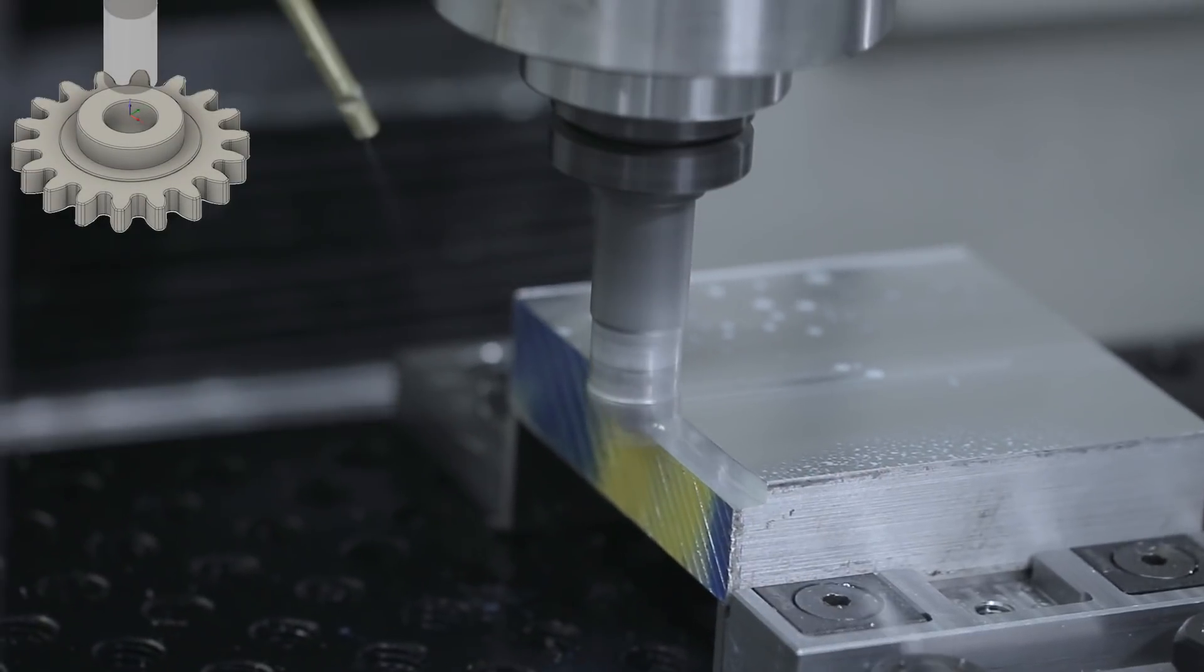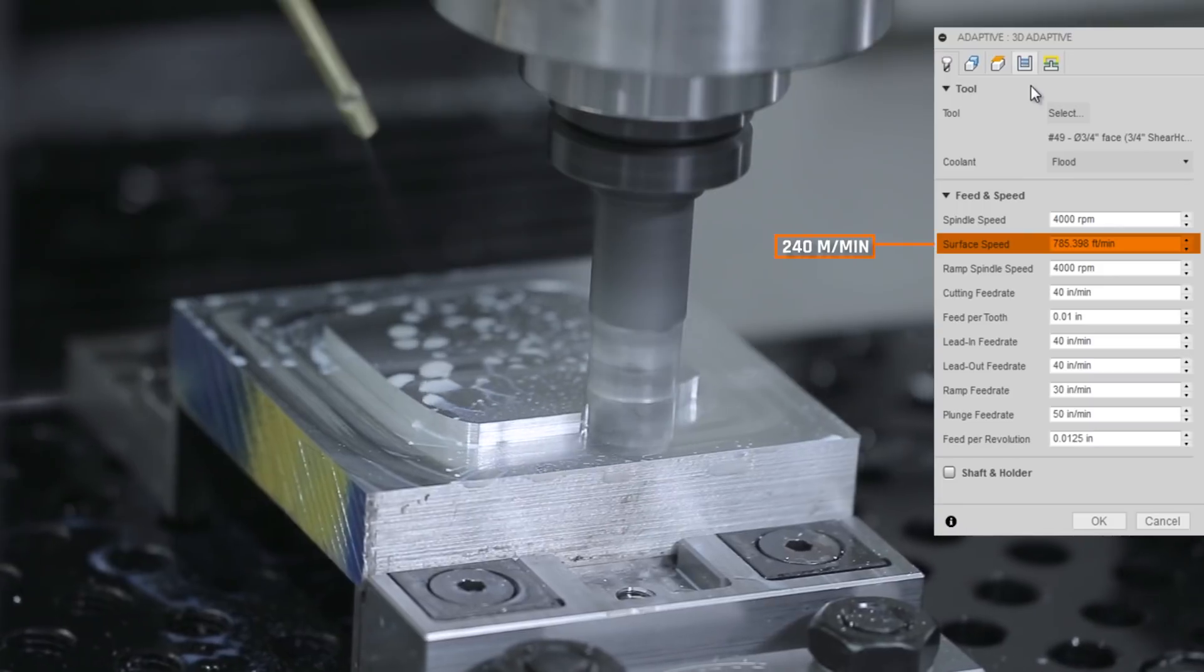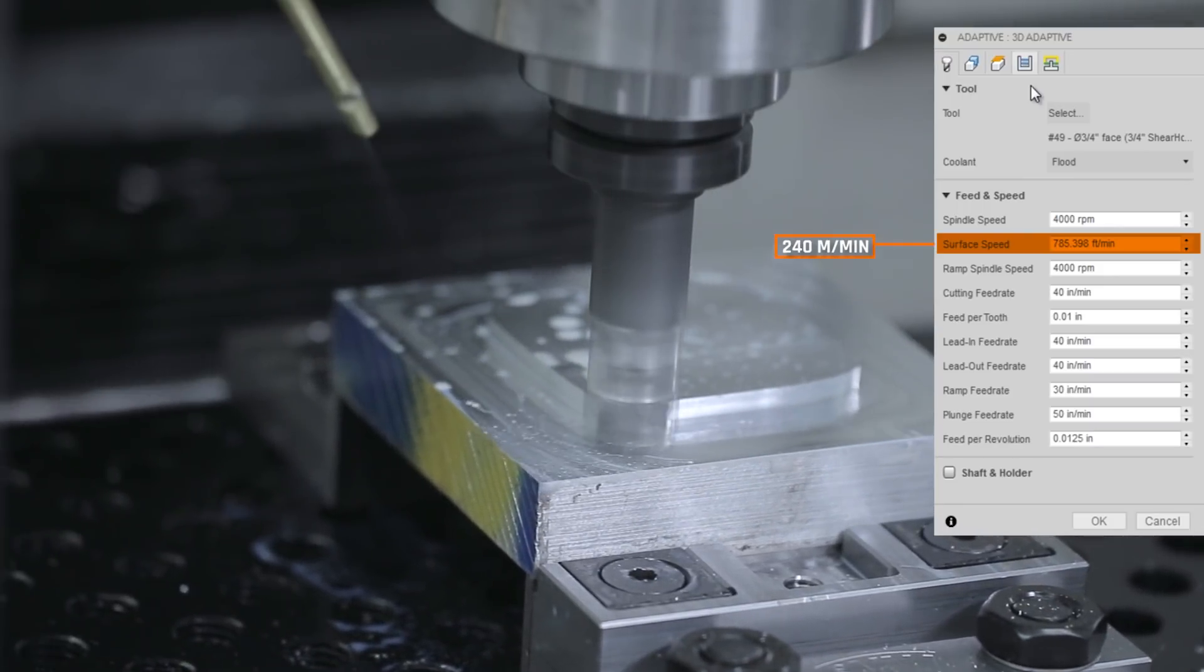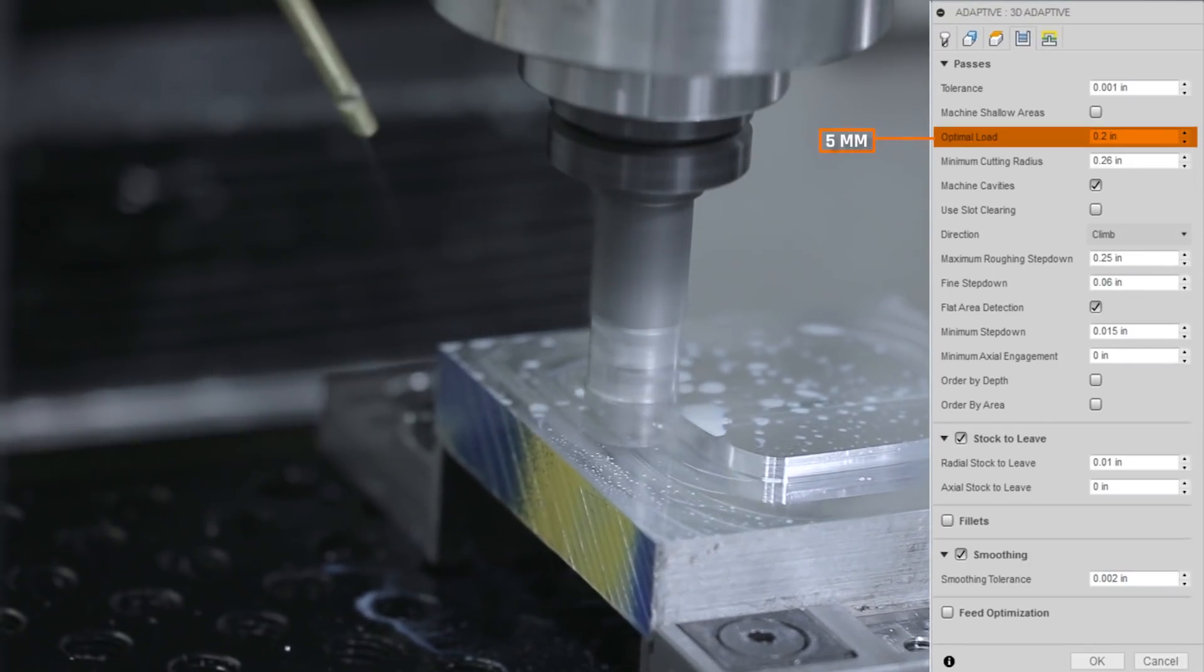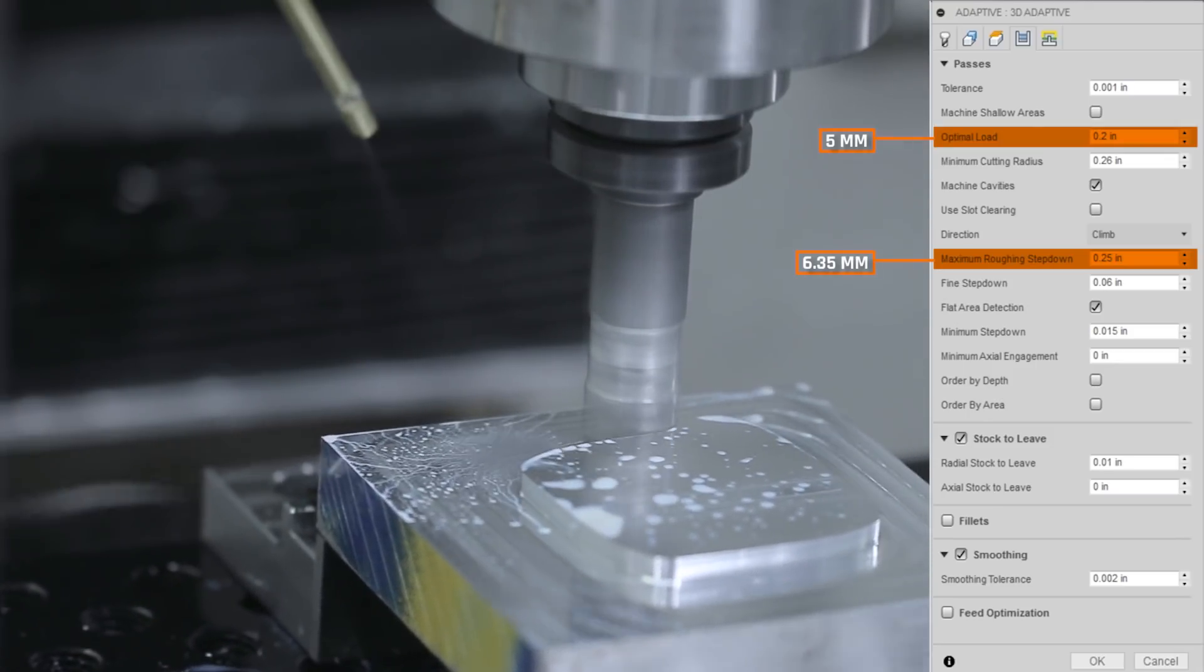Next up, Sheerhog. 785 surface feet per minute for surface speed, 10,000 feet per tooth, 0.2 inch optimal load, and 0.25 inch depth of cut.